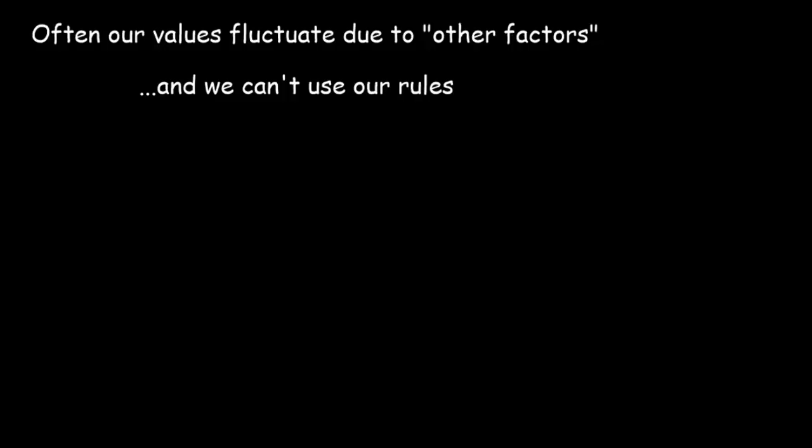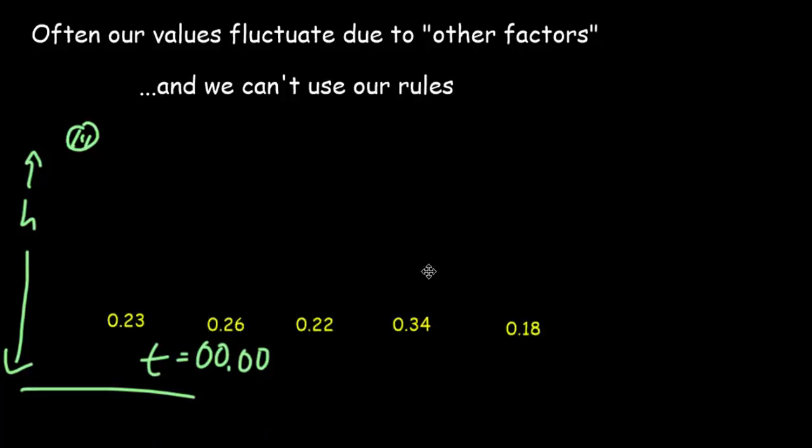What often happens when we make a measurement and repeat it is we get large fluctuations in those values due to one or more factors. And if that's the case, we can't use our simple rules of using half the smallest scale division, etc. And a very common example of that is with time measurements. So let's say we've got a marble and we're going to drop it from a certain height and measure how much time it takes to get to the bottom. And typically you'd have a stopwatch in hundredths of a second. So let's say you did five trials and these were the five times you got in seconds.